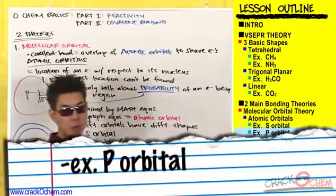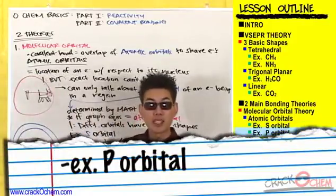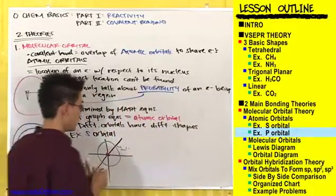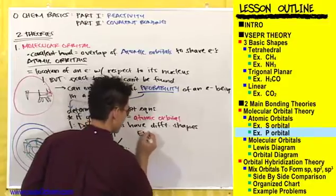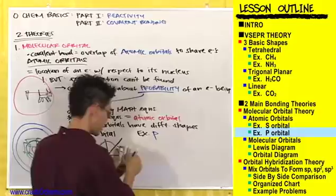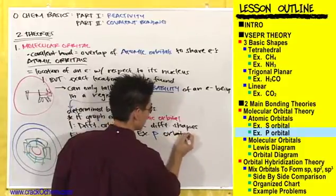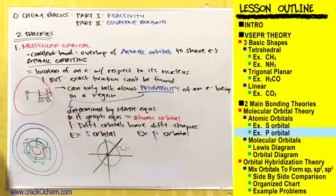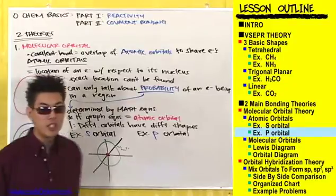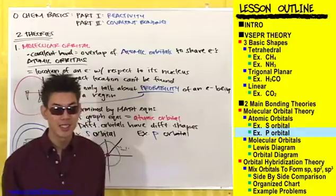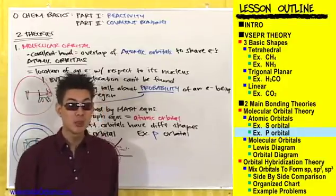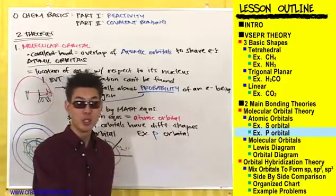So that was an example of one type of orbital — an S orbital. The other type of orbital you're going to be dealing with in OCHEM is a P orbital. P orbitals come in lobe shapes.